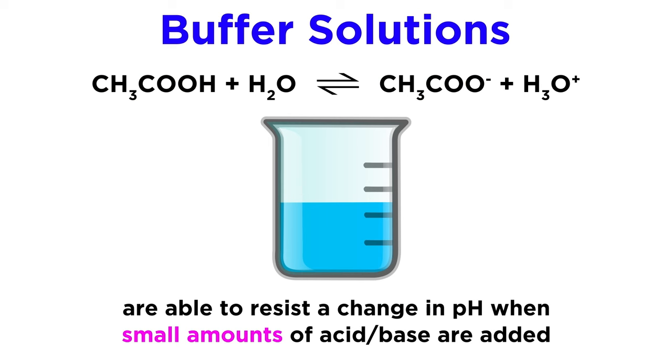But as we have said, this is for small amounts of acid or base. Every buffer solution has a limited capacity to resist a change in pH, and once a certain amount of acid or base has been added, it will no longer be able to function. As we add more and more acid or base, the buffering action of the solution will diminish, and once all of the weak acid or weak base has been exhausted, the solution will no longer have any buffer capacity, and there will be no resistance to change in pH.